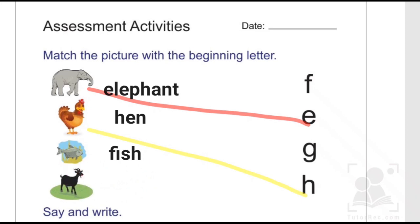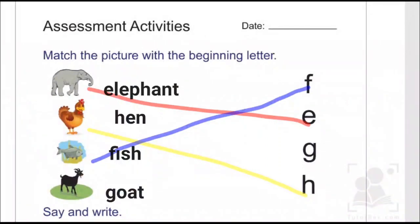The beginning letter of 'fish' is F, therefore we are going to match this picture with its respective letter F. The last picture is of a goat, and the word 'goat' spells G-O-A-T, therefore we are going to match this picture with its respective letter G.